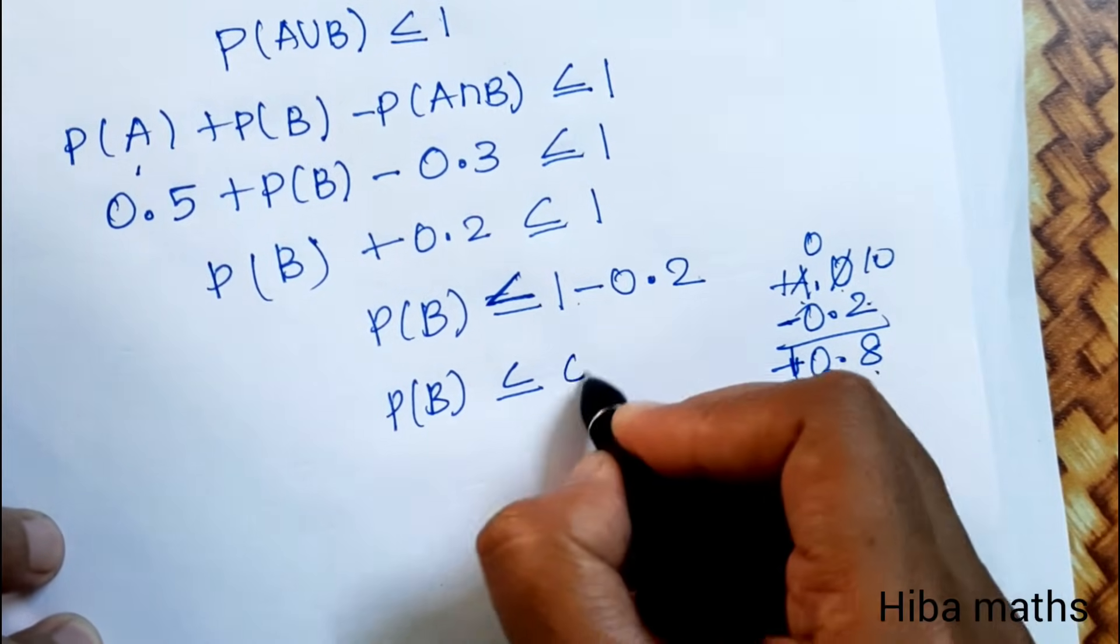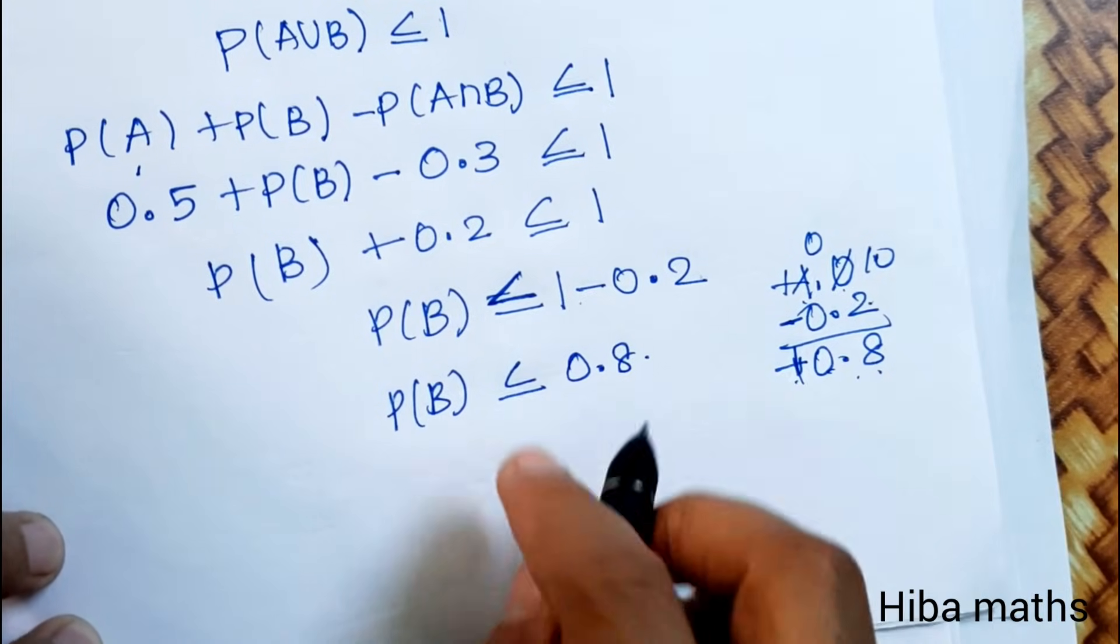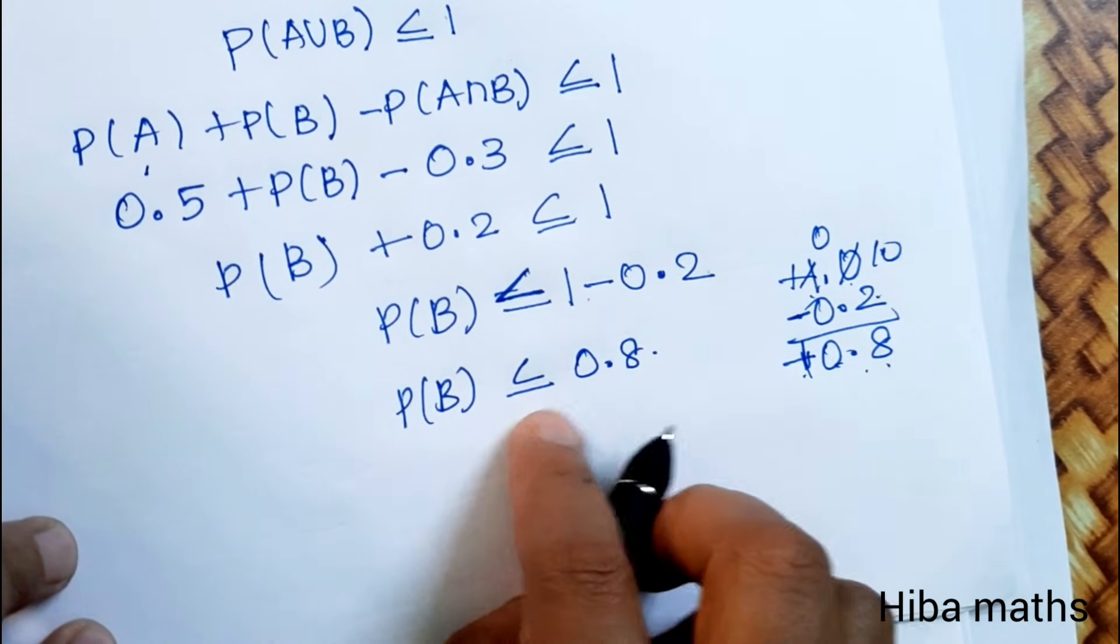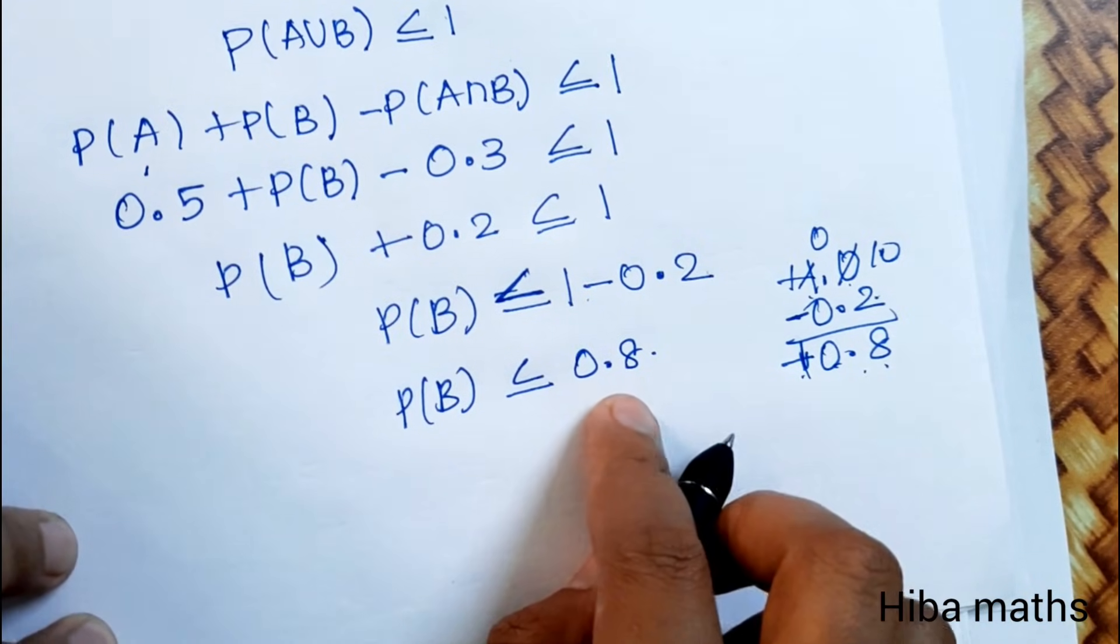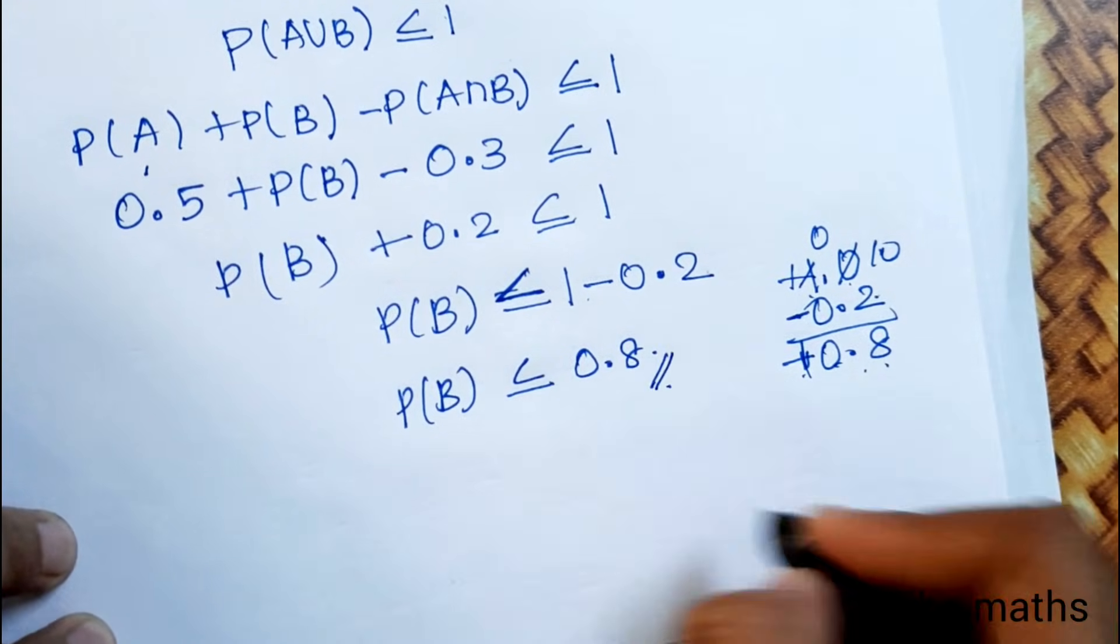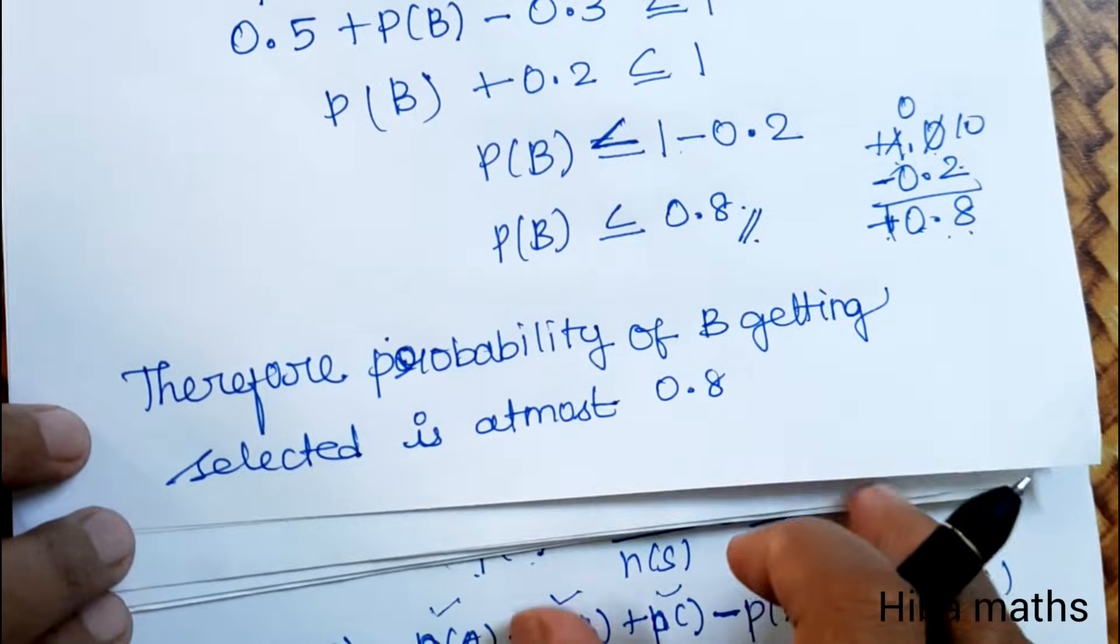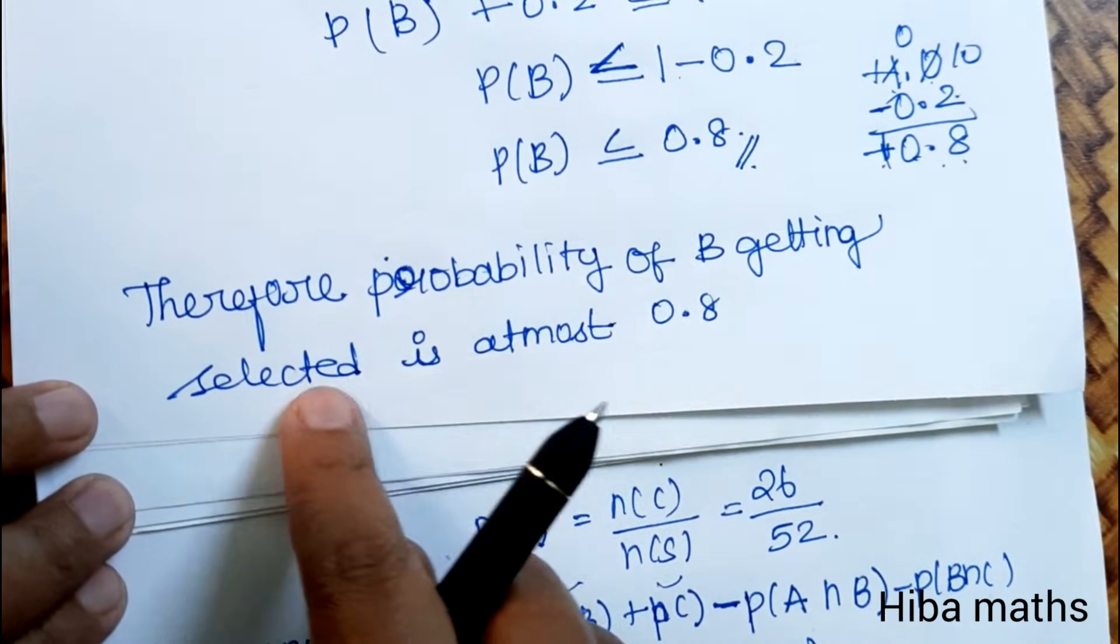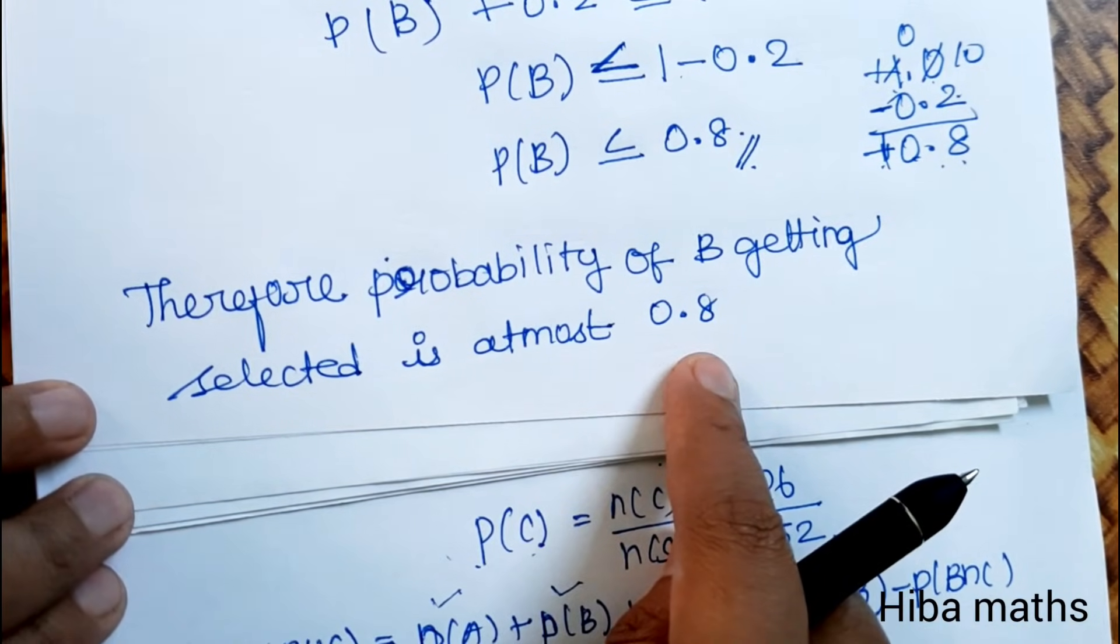The answer is 0.8, less than or equal to. We have proved that P(B) is less than or equal to 0.8. I hope it's easy to understand. Thank you so much for watching.